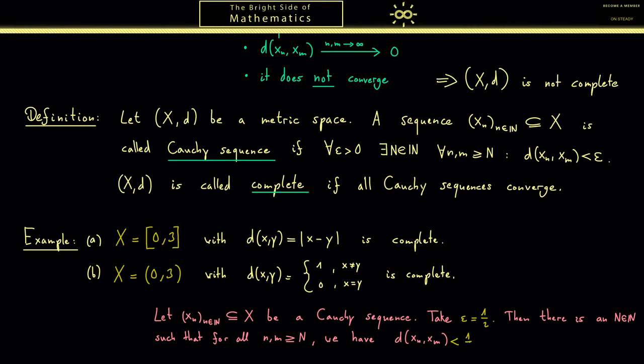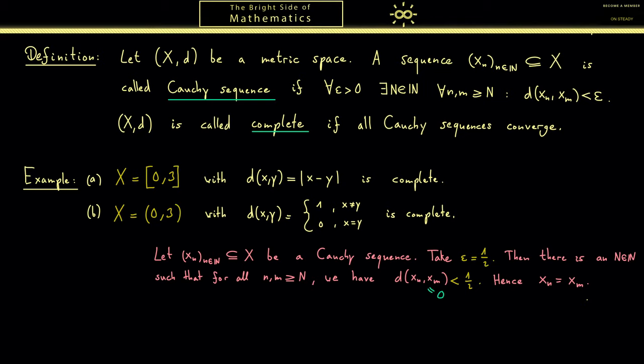However, now we see in the definition of the metric that less than 1 half is only possible in the bottom case. Therefore the distance is indeed 0, which again means that x_n is the same as x_m. So please note this works for almost all indices here. Only finitely many before could be different. Hence it tells you that the sequence is indeed constant after the index N.